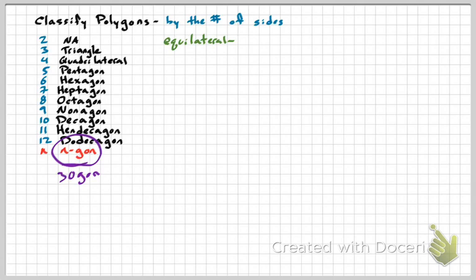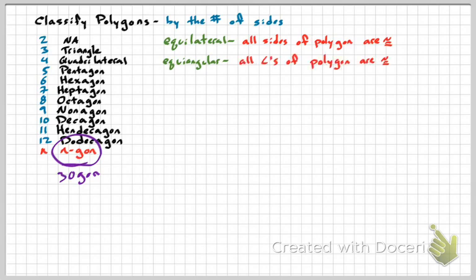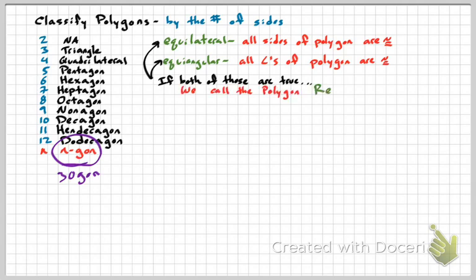Two important vocabulary terms describe polygons: equilateral means all sides of the polygon are congruent — like a square where all four sides are equal. Equiangular means all angles of the polygon are congruent. If a figure is both equilateral and equiangular, it is called regular. A square is a classic example of a regular polygon.